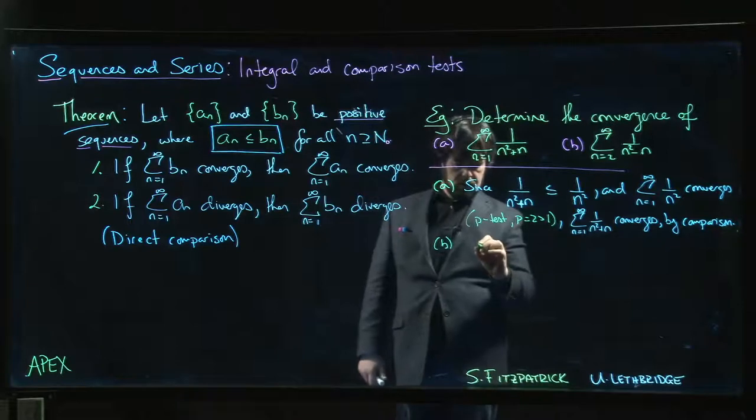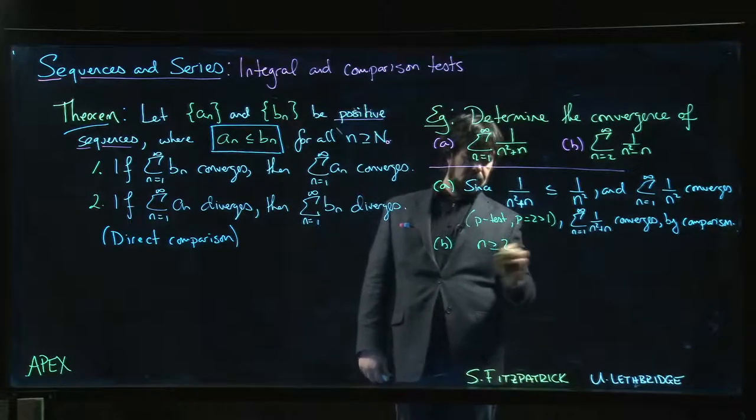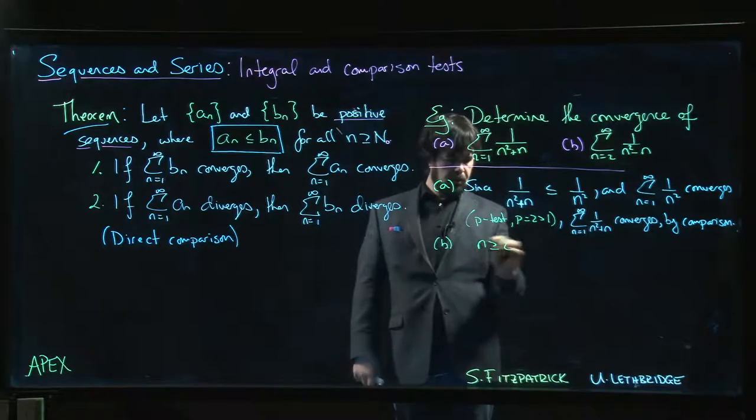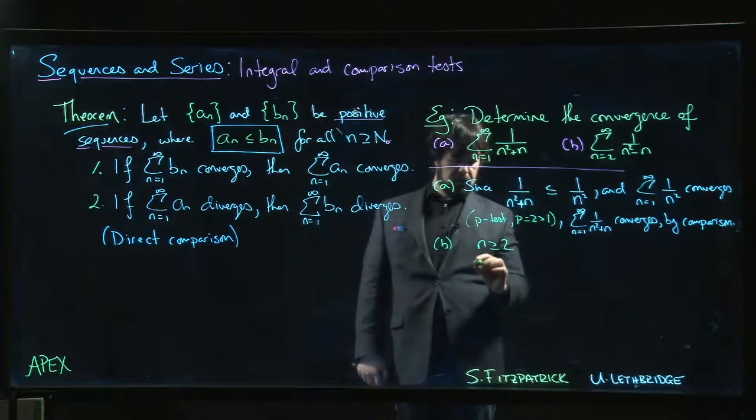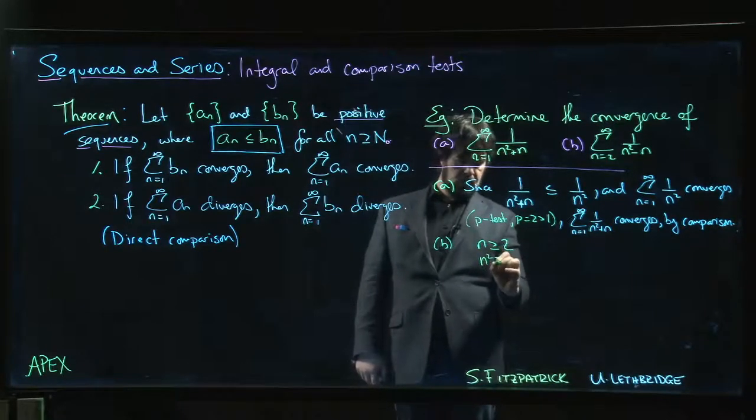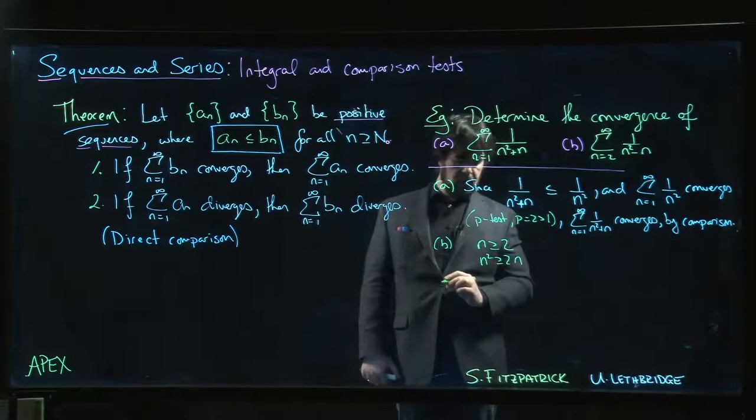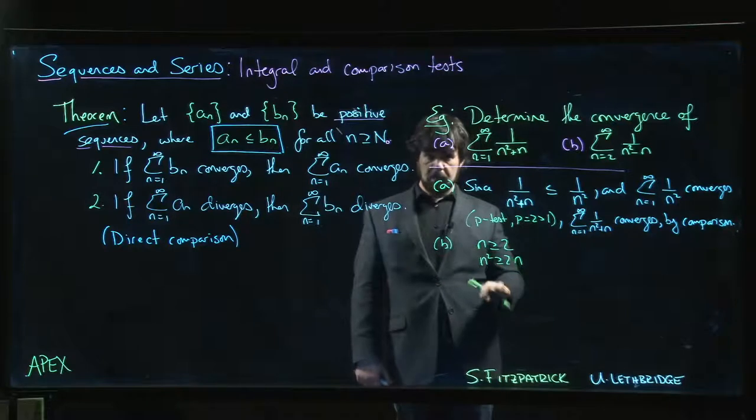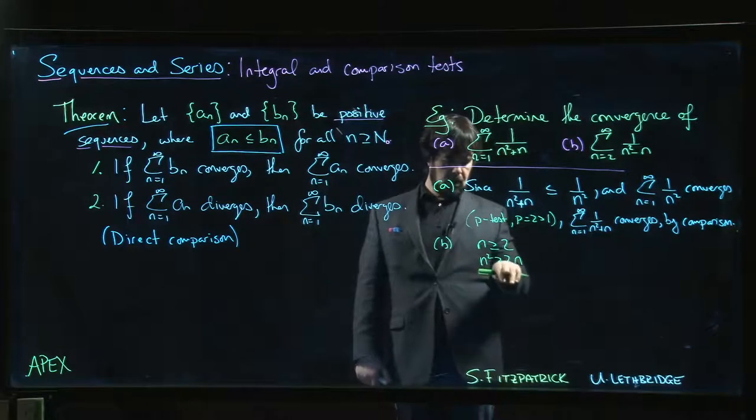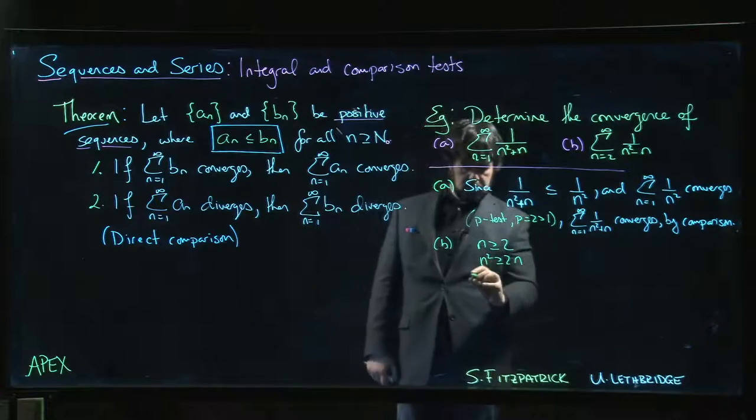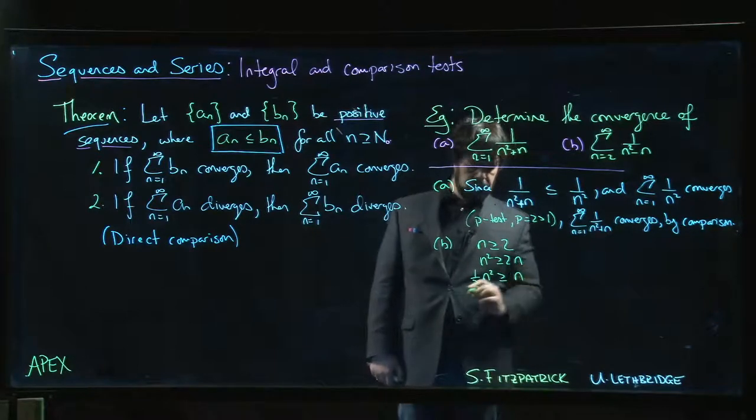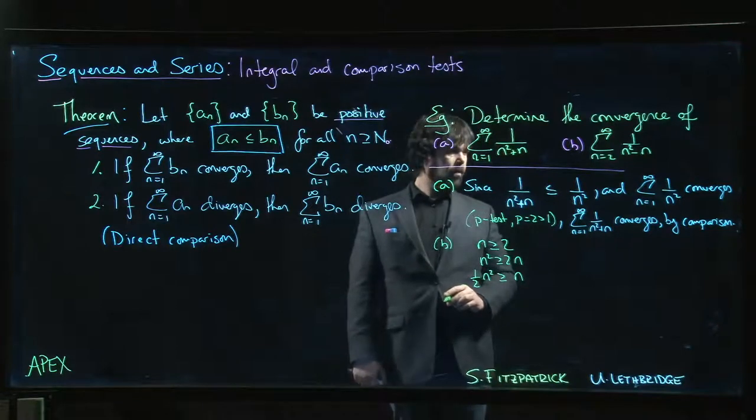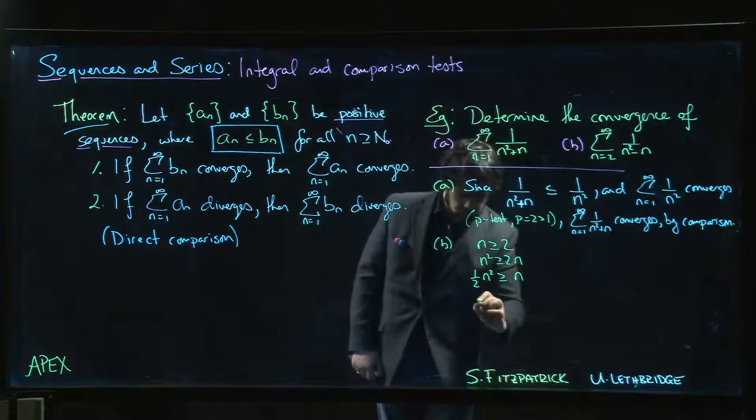n is bigger than or equal to 2 in this scenario. If I multiply both sides by n, I know that n² ≥ 2n. I can multiply both sides of an inequality as long as the thing I'm multiplying by is positive. And then I can also multiply by ½, so ½n² ≥ n. Or in other words, -n...